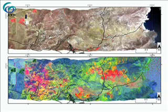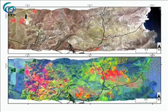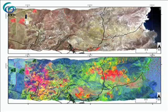The top map shows the HyMap image seen in a near-infrared false color composite, where vegetation appears red, water appears dark blue or black, and iron-rich rocks appear in shades of yellowish green. The bottom map shows the alteration color composite that we discussed earlier.